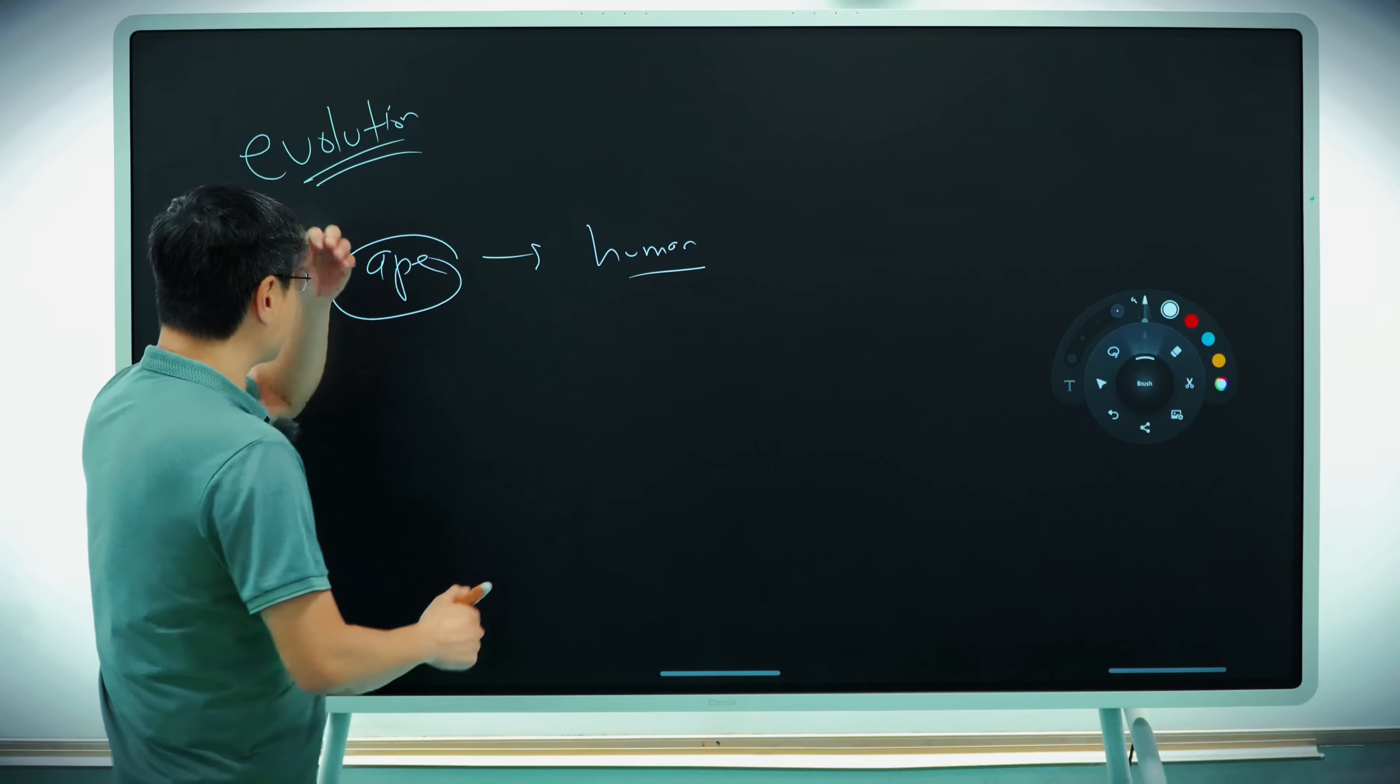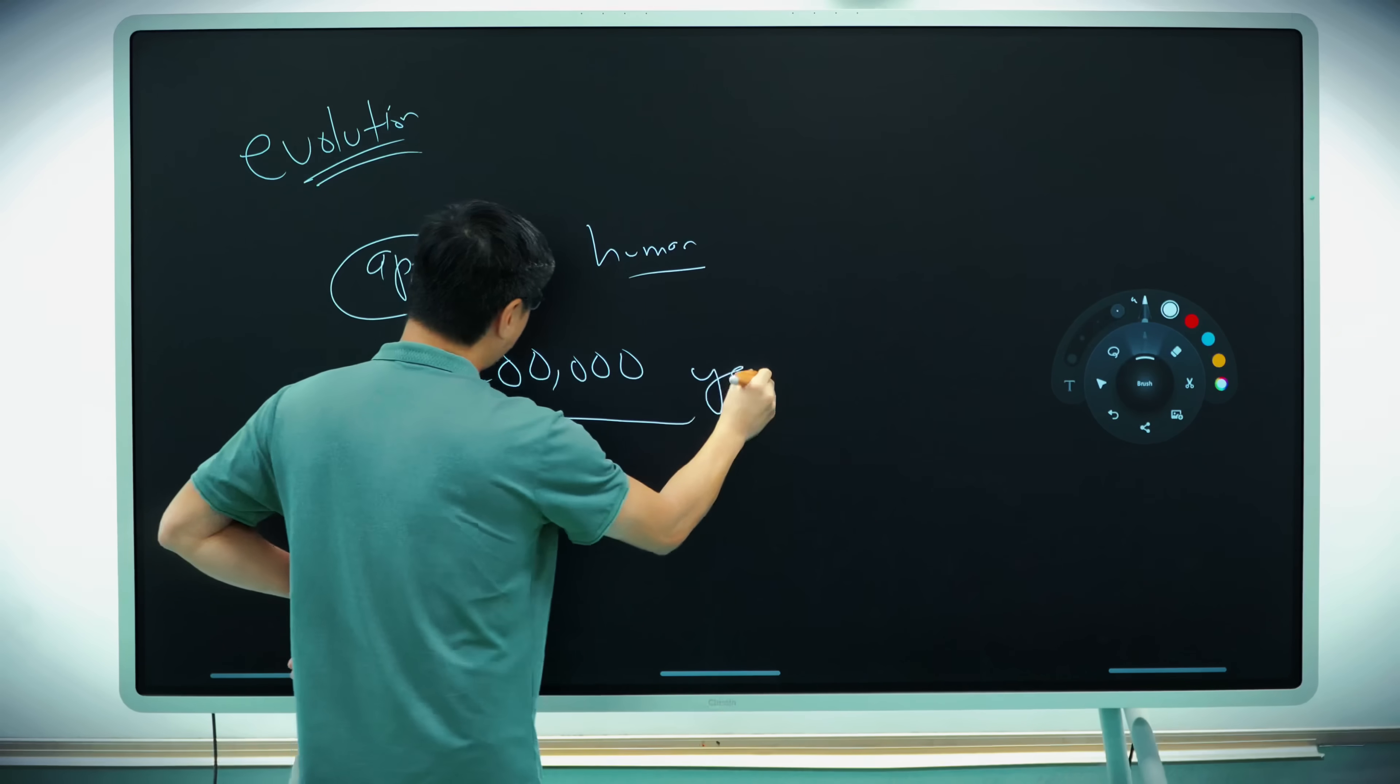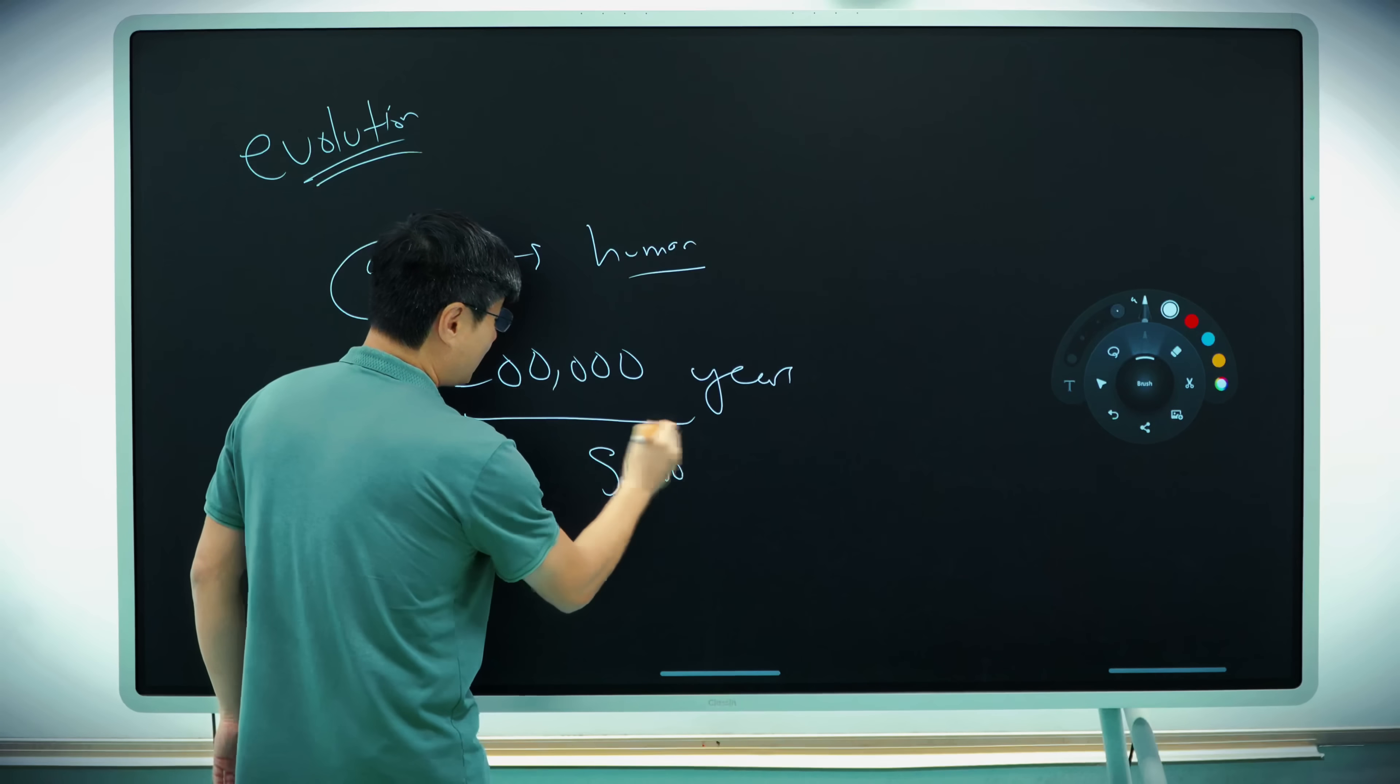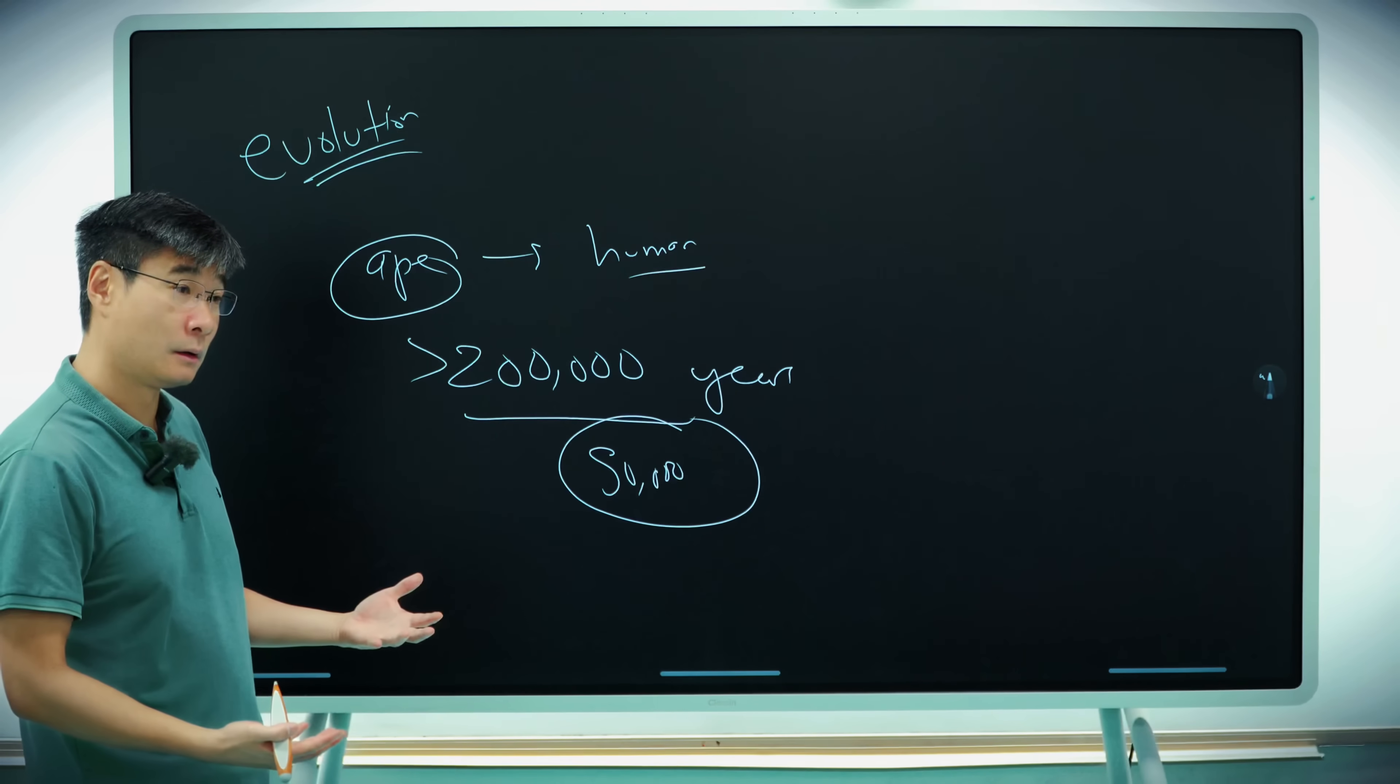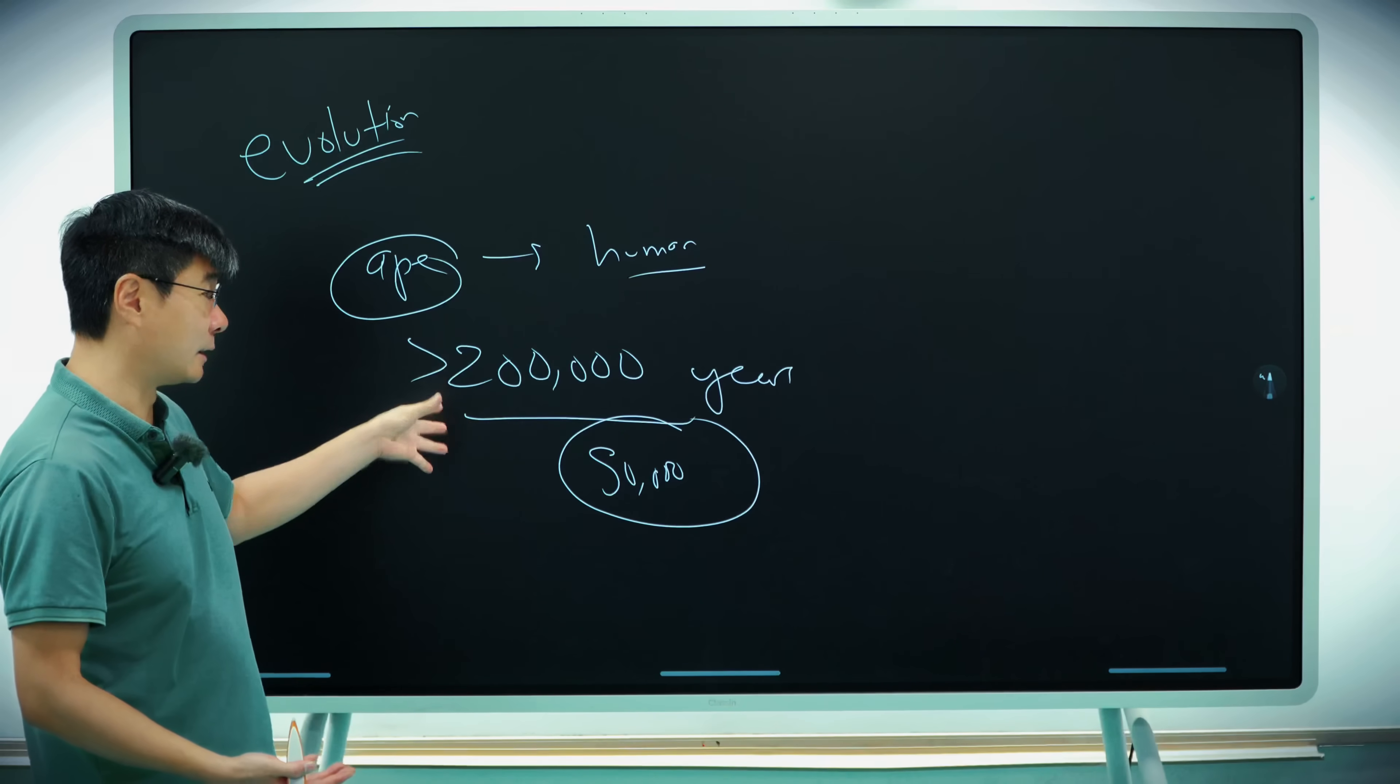The second problem is humans have been around for about 200,000 years. That's a long, long time. We only have maybe 50,000 years of history. So where do the other 100,000, 150,000 years go? We don't know. This is also another huge problem with the theory of evolution.